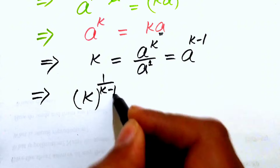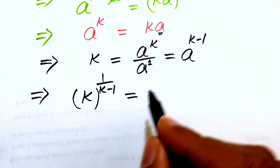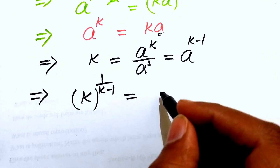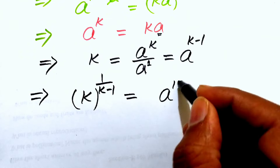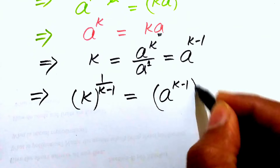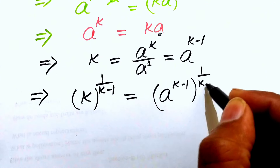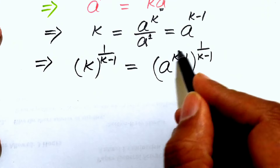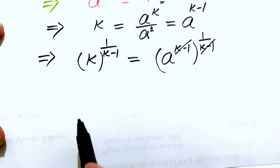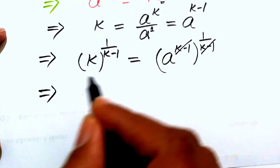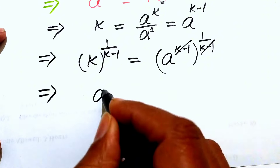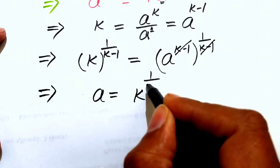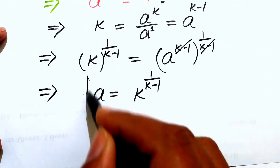We take the one over (k minus one) power on both sides to eliminate the k minus one exponent. We write: a to the power of (k minus one), whole power one over (k minus one). The exponents cancel and we get a equals k to the power of one over (k minus one).